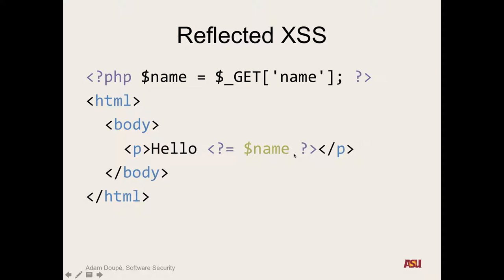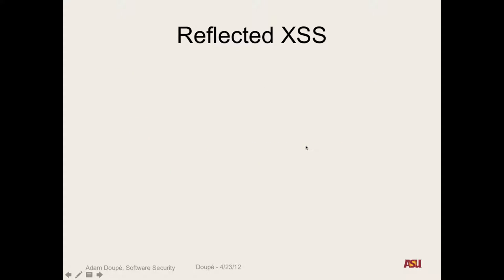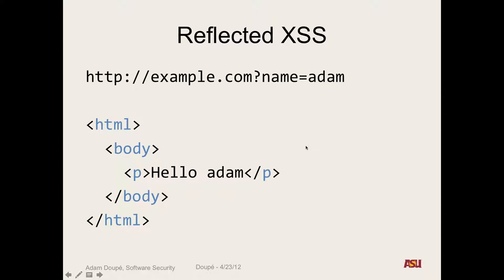What happens on the server when it gets a request with name=Adam? It gets the value of that key 'name', which was Adam, sets it into the name variable, outputs the start of the HTML with 'hello', and then replaces the PHP tag with whatever we sent. If it's Adam, it says 'hello Adam'. But what does the browser see?